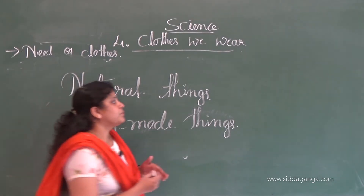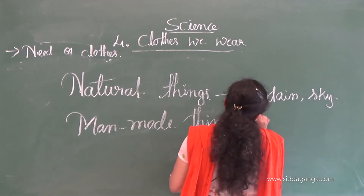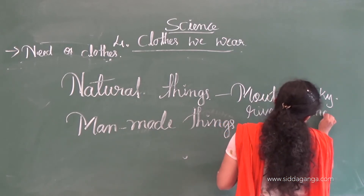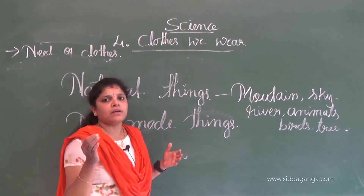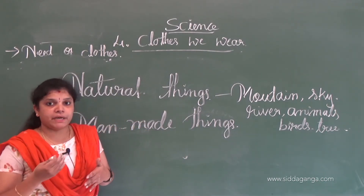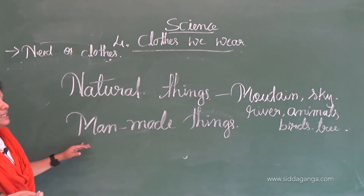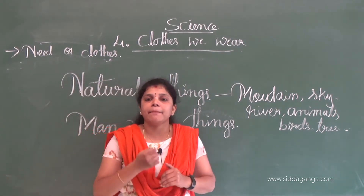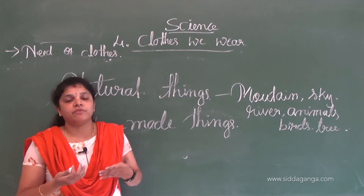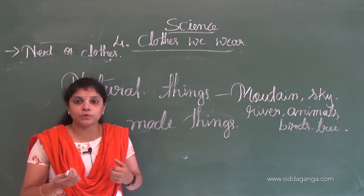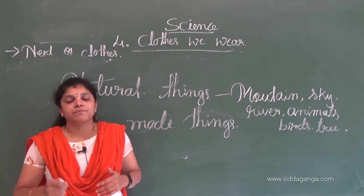Examples of natural things are: mountains, rain, sky, rivers, animals, birds, trees, and human beings. These are all gifted by nature, so they are called natural things. Man-made things are things which are made by man for their use and convenience.